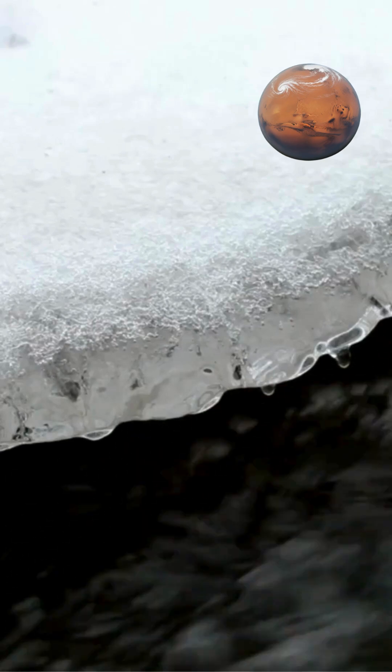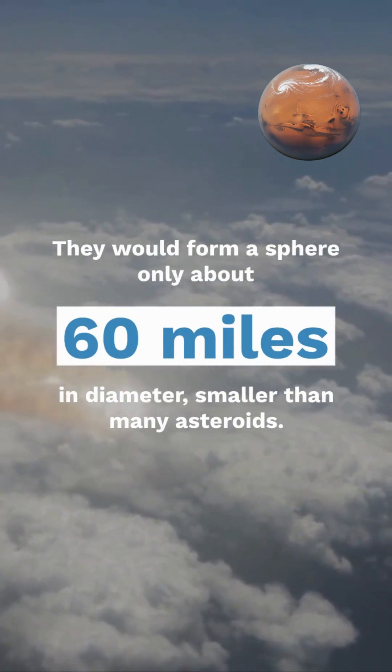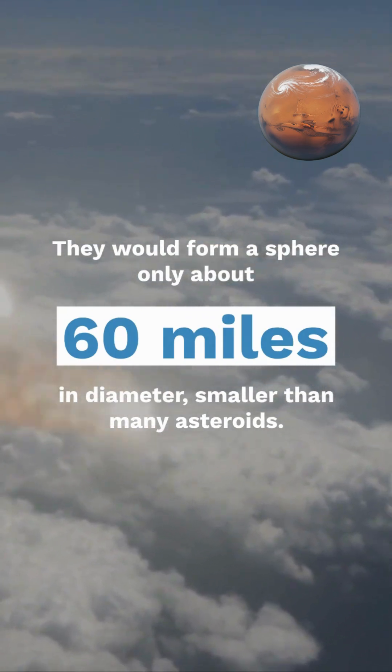If all ring particles were compressed into a single body, they would form a sphere only about 60 miles in diameter, smaller than many asteroids.